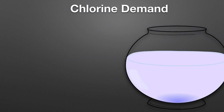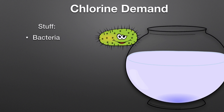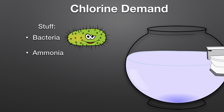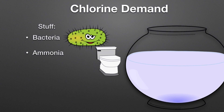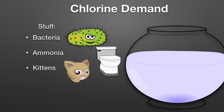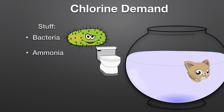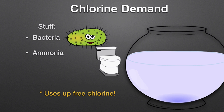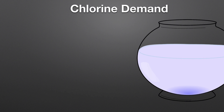We'll look at this tank of secondary effluent. In it there's stuff made up of organic material like bacteria, and inorganic material like ammonia and urine — okay, maybe not the kittens — but other things that will react with chlorine. All that reactive stuff exerts a chlorine demand and uses up free chlorine.